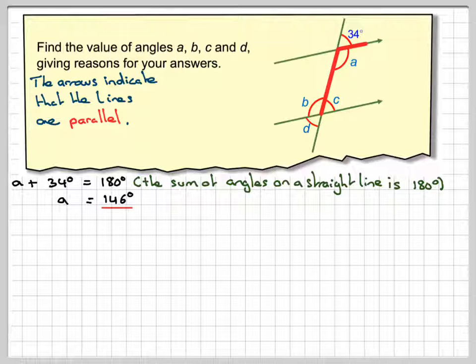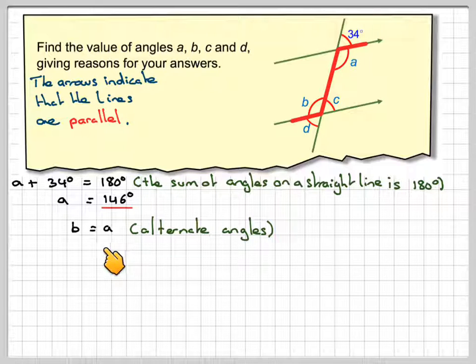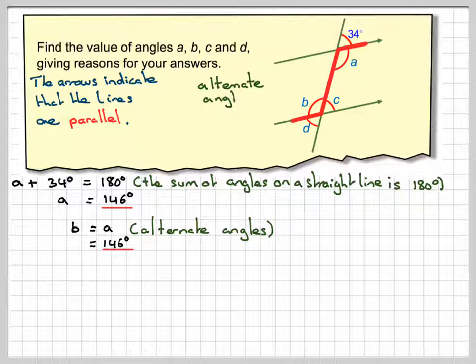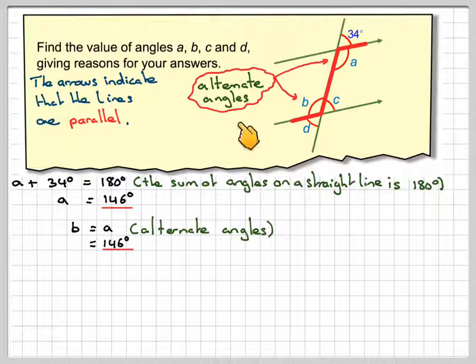Now, if we draw this line in here, we can see that A and B are what's known as alternate angles. Sort of have got a Z here, sometimes they're known as Z angles. So B will actually be equal to A if the lines are parallel, and these are called alternate angles. Therefore, A is equal to B is 146 because they are alternate angles.